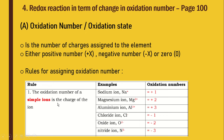The oxidation number of a simple ion is the charge of the ion. We already learned about charge during Form 4, where you have to memorize the charge for anions and cations. So the oxidation number of a simple ion is the same as the charge of that ion. For example, sodium ion Na⁺ has oxidation number +1, and magnesium ion Mg²⁺ has oxidation number +2.